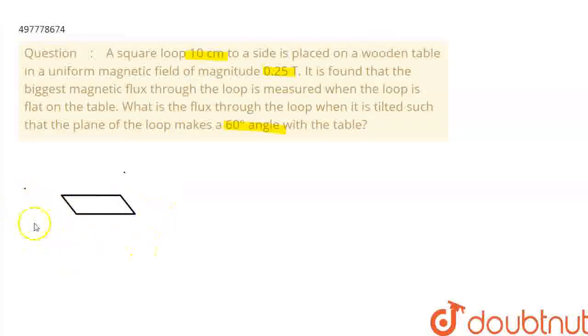So, a square loop is placed on a table, which means that the side is 10 cm. We will convert it to meters. It will be 0.1 meter.